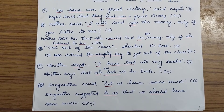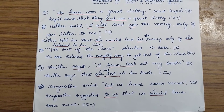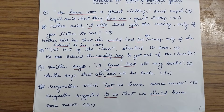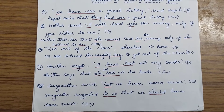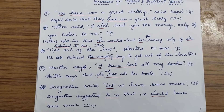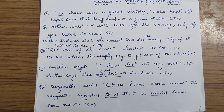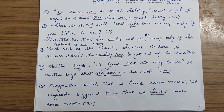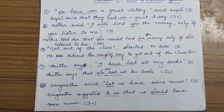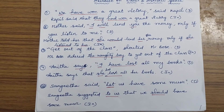Fourth one: Anita says, 'I have lost all my books.' Here, if the reporting verb is 'says' (present tense), 'have lost' is not changed to 'had lost' — but because the subject changes to 'she' (Anita), it becomes 'has lost.' So: 'Anita says that she has lost all her books.' 'I' changes to 'she' depending on the subject, Anita.